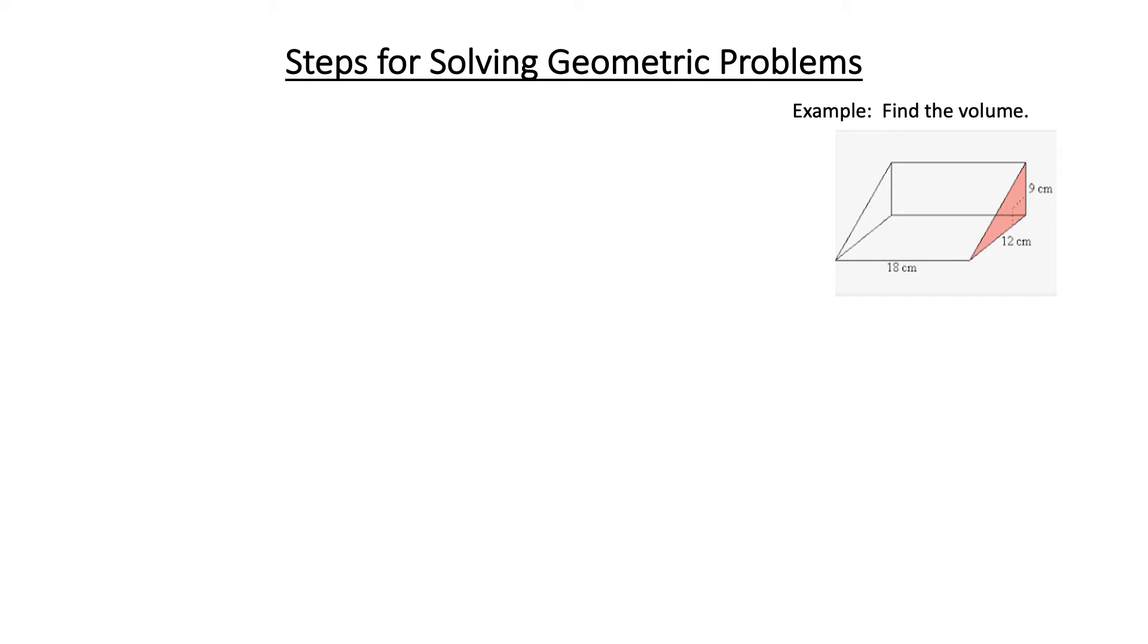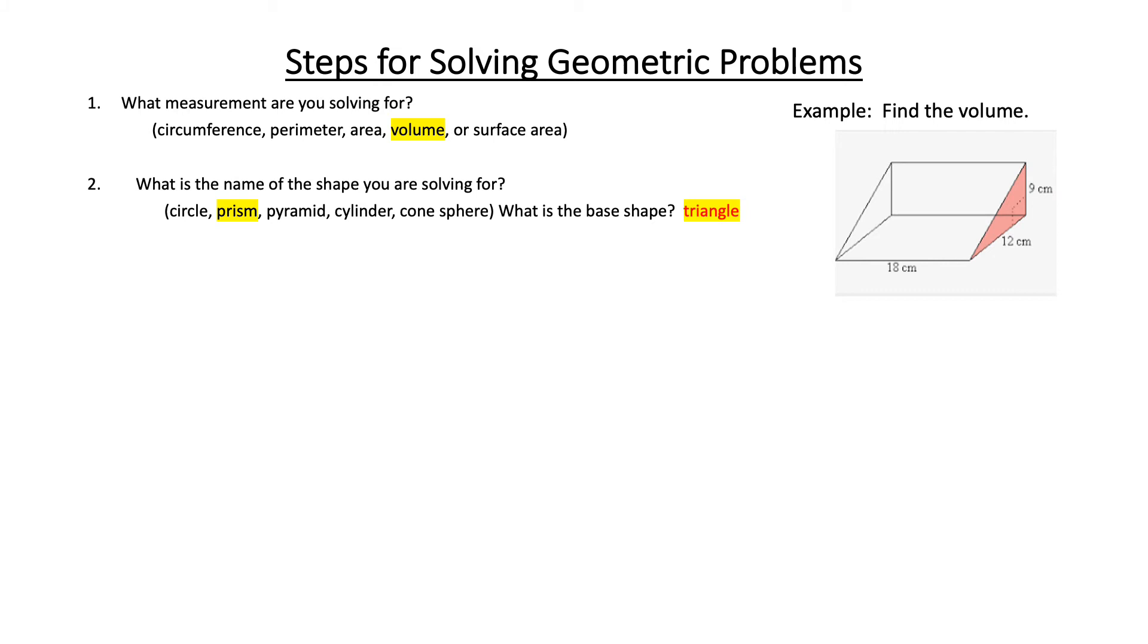So let's look at an example. We have an example here where we're to find the volume of the shape. First we ask what is the measurement that we're solving for? Well, the problem says to find the volume. Next we need to know the name of the shape. So we see that it's a prism and it has a triangular base. It's a prism because it has two bases and rectangular faces. So we have a triangular prism and we're looking for volume.